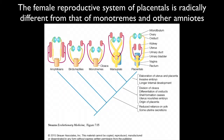In terms of timing and history, the first thing that happened is there was reduced reliance on yolk and some uterine secretions. Then the cloaca was divided so that there was a vagina and a rectum as separate entrances or exits. The oviducts differentiated, shell formation stopped, the uterus developed and began to nourish embryos, and the placenta originated — that we share with marsupials. In the placentals, the eutherians, the uterus and placenta were elaborated, the embryo became invasive, and there was a longer period of internal development.